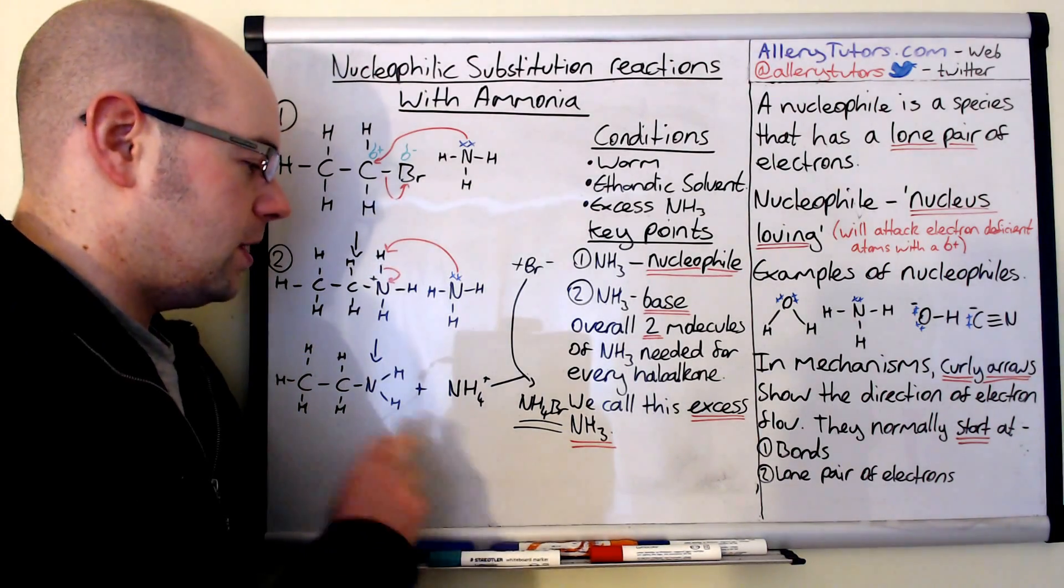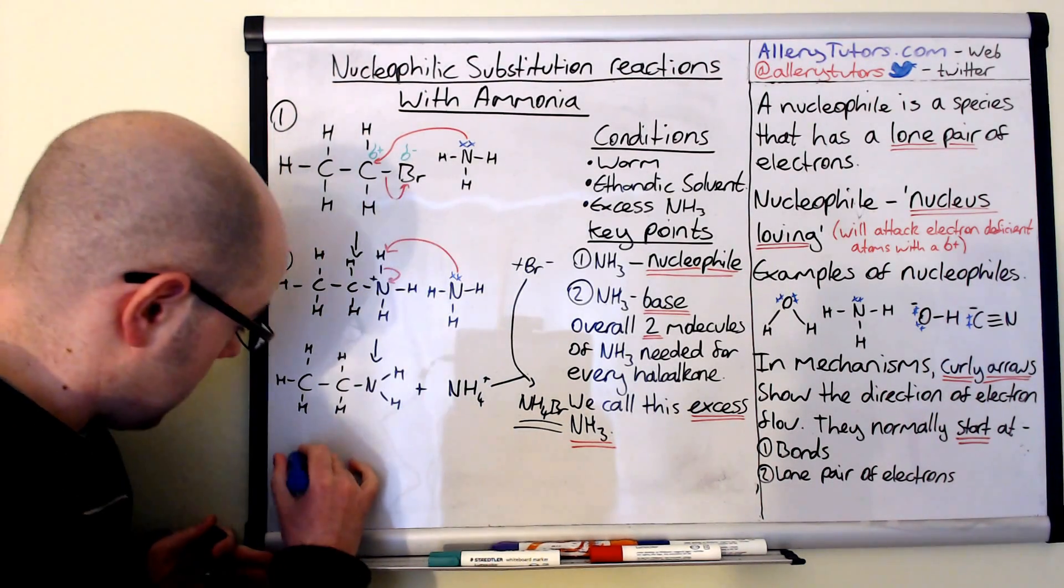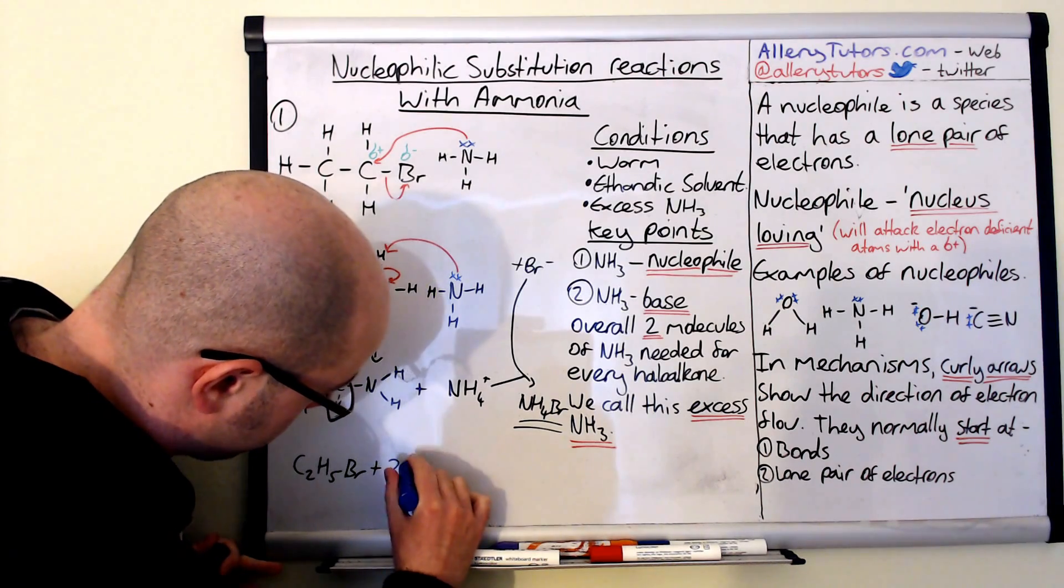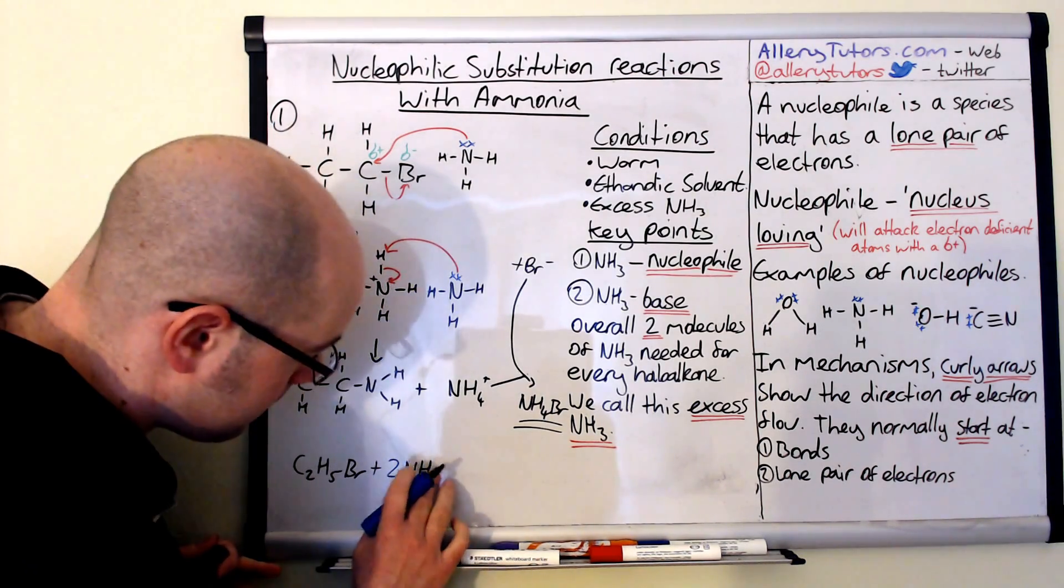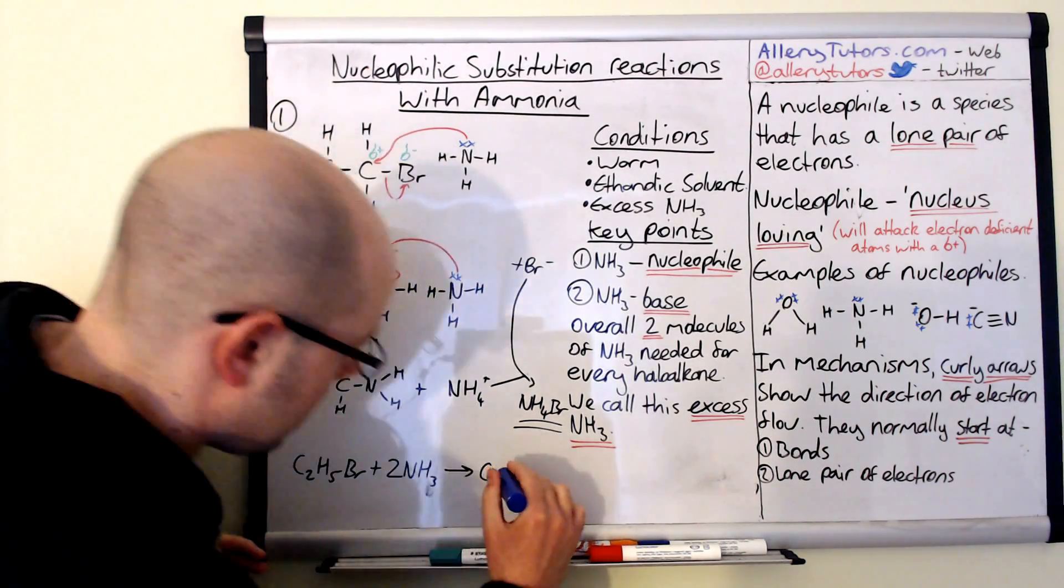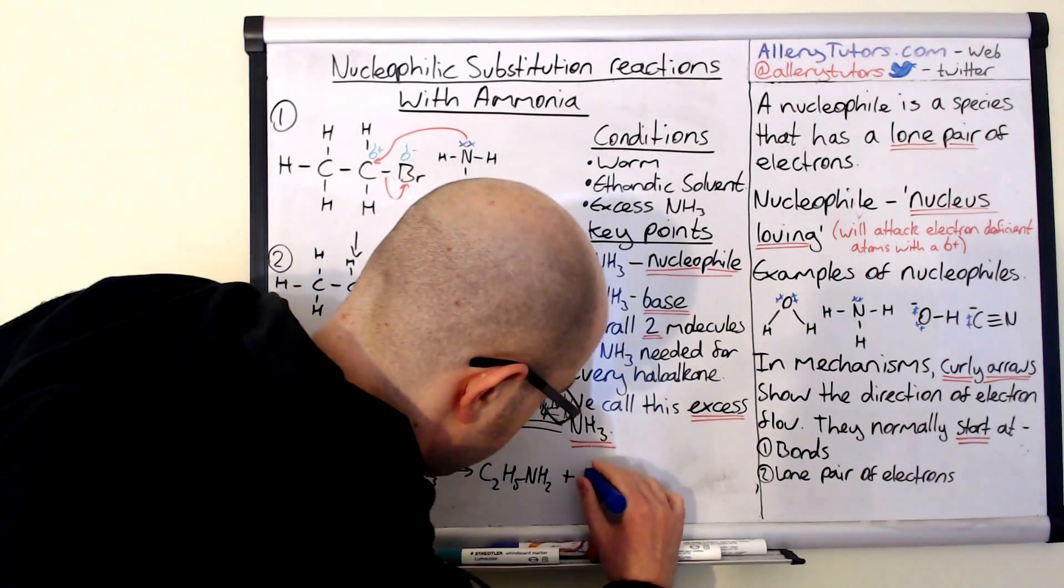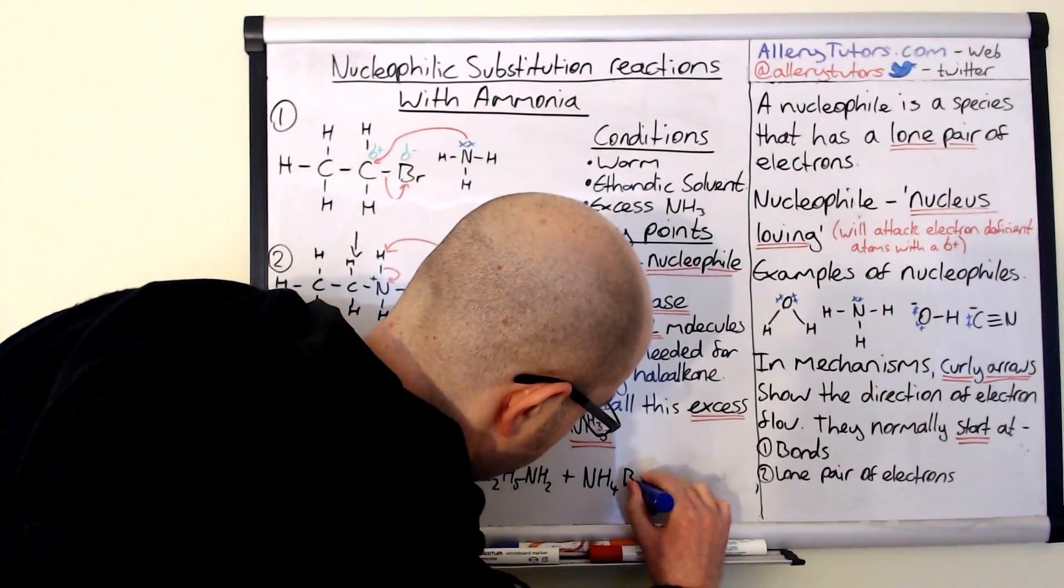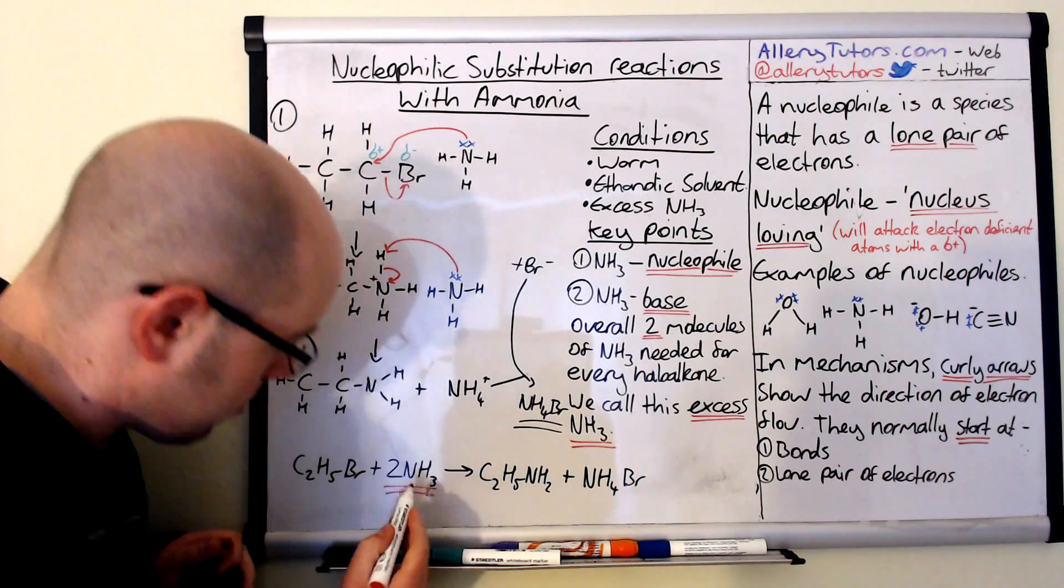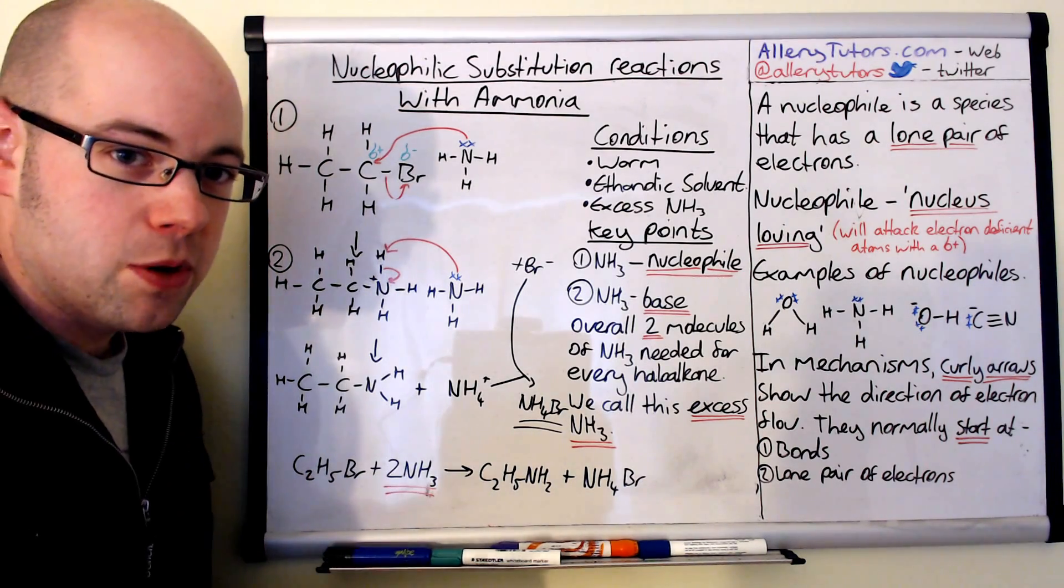So it's actually a double ammonia reaction. So overall what's happening, we've got C2H5Br and that's going to react with two lots of ammonia which is NH3 and then what we are making is C2H5NH2 which is this molecule here plus NH4Br. So you can see that we have an excess of ammonia. When we have a molar ratio where we need more than one compared to the other molecules, for example we've got two for every one of them, we say that we need excess ammonia for this reaction to happen.